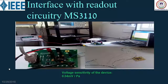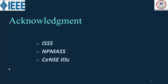Finally, the device was integrated with the ASIC MS311 and the voltage sensitivity was found to be about 0.01 millivolts per pascal. Earlier literature reported sensitivity of about 0.1 femtofarads, whereas mine achieved 0.7 picofarads — a significant improvement in device design. I would like to acknowledge IEEE for funding registration, NPMASS for fabrication and characterization, and Sense for all their support. Thank you.